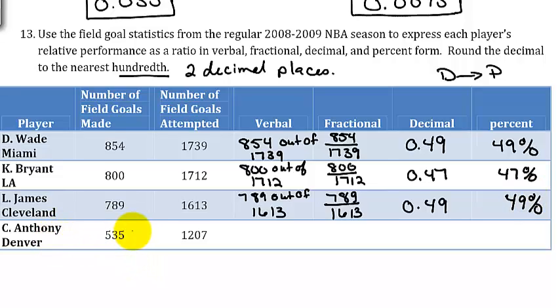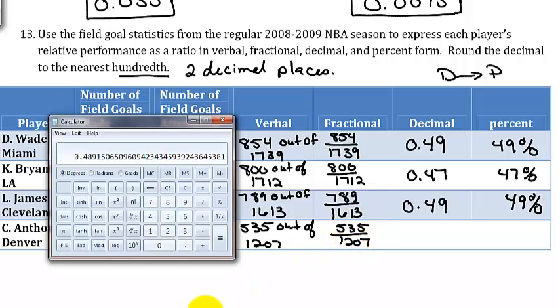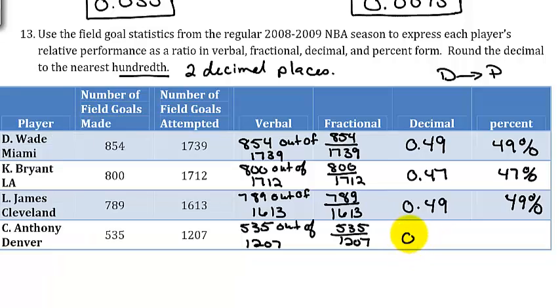For Anthony, 535 out of 1,207. As a fraction, it would be 535 over 1,207. Now we want to compute our decimal. We have 535 divided by 1,207. That gives us 0.443, so we're going to leave it as 0.44. That would be 44%.